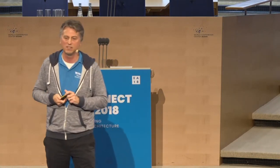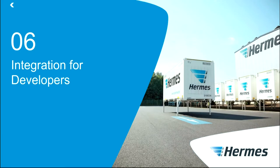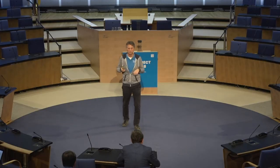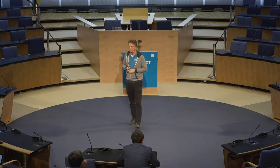We have three integration topics. The first is integration for developers. Developers don't like to enter data in enterprise architecture tools — they want to stay in their developer stack. So we needed a solution where developers can use their normal developer tools. On our side, we use Jenkins for deployments. We used the standard LeanIX microservice add-on. Requirements were: it must be automatic, seamlessly integrated into the continuous deployment pipeline, and easy to use. If a developer needs three hours to get it working, they won't do it.